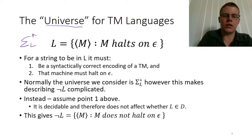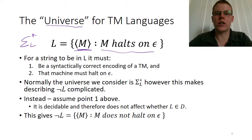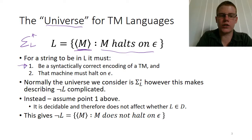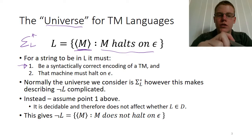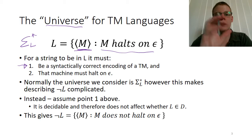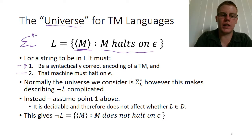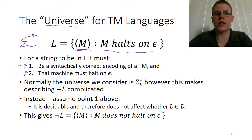If we have a language consisting of encodings of machines such that the machine halts on some string — for example, epsilon — then for a string to be in the language it must satisfy two things. First, it has to actually encode a Turing machine. We can easily build strings from the encoding alphabet that do not correspond to actual Turing machines. Second, that Turing machine must halt when given the empty string as input.